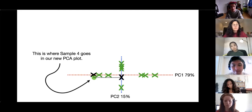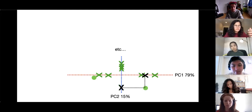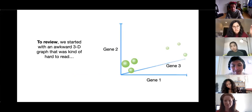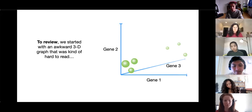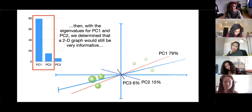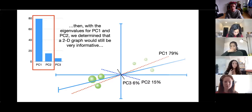Here's the scree plot — PC1 and PC2 account for the vast majority of the variation in the data. That means a 2D graph using just PC1 and PC2 would be a good approximation of this 3D graph, since it accounts for 94% of the original variation. We use the scree plot to justify throwing away PC3 and reducing it to a two-dimensional graph. To convert the 3D graph into a 2D PCA graph, we strip away everything but the data, PC1, and PC2, project the samples onto PC1 and PC2, then rotate so PC1 is horizontal and PC2 is vertical. The projected points tell us where each sample goes in the new PCA plot.